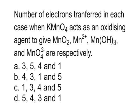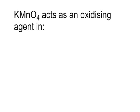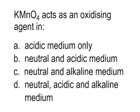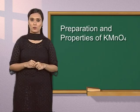Question 5: The number of electrons transferred when potassium permanganate acts as an oxidizing agent in various media: the answer is option A — 3, 5, 4 and 1. Question 6: Potassium permanganate acts as an oxidizing agent in (A) acidic medium only, (B) neutral and acidic medium, (C) neutral and alkaline medium, or (D) neutral, acidic and alkaline medium. The answer is option D — potassium permanganate acts as an oxidizing agent in neutral, acidic and alkaline medium.